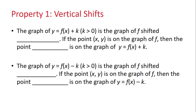In summary: the graph of y = f(x) + k, where k > 0, is a graph of f shifted up k units. If the point (x, y) is on the graph of f, then the point (x, y + k) is on the graph of y = f(x) + k. Similarly, the graph of y = f(x) − k is a graph of f shifted down k units. If the point (x, y) is on the graph of f, then the point (x, y − k) is on the graph of y = f(x) − k.